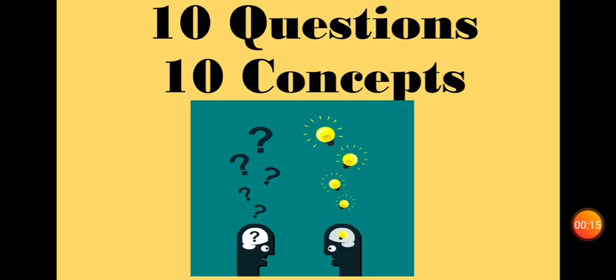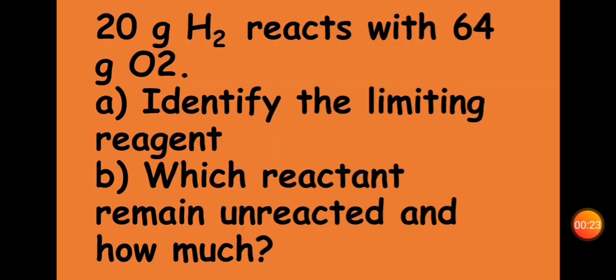It is very simple and very fast. The next question is direct. Question number 1: 20 grams hydrogen reacts with 64 grams oxygen. Identify the limiting reagent, which reactant remains unreacted, and how much?